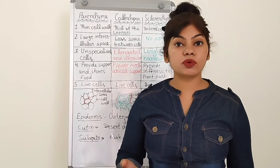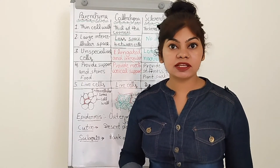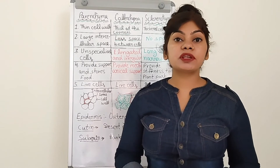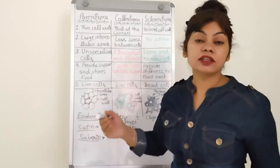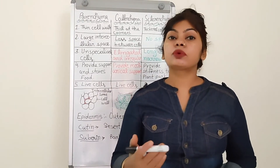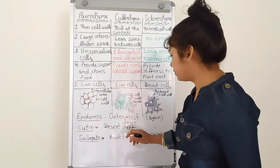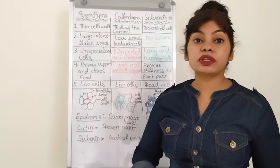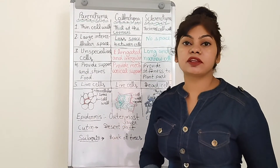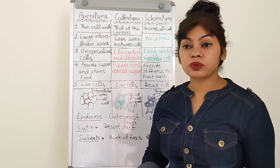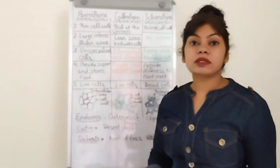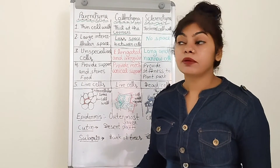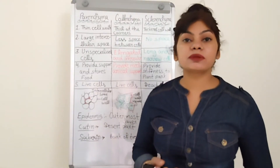As a plant grows older, the old cells are replaced by the secondary meristem. This gives hardness — the cells are compactly arranged with no intercellular space, providing stiffness. This is what we call the cork or bark of a tree — the outer layer of the stem. A chemical substance called suberin is present in these cells, which makes them impervious to water and gases.